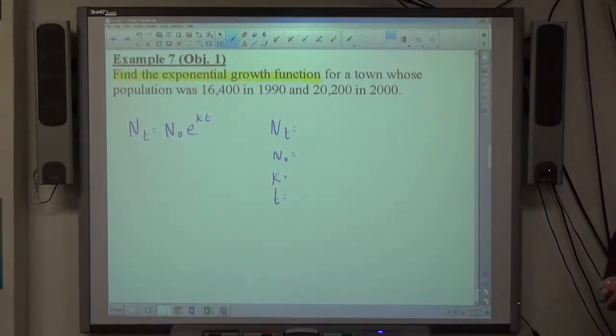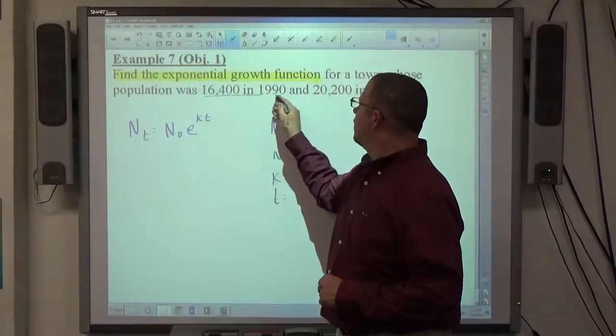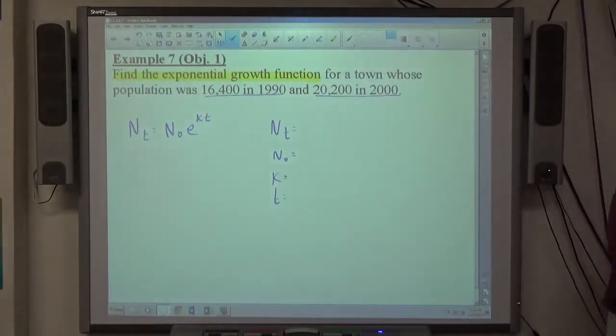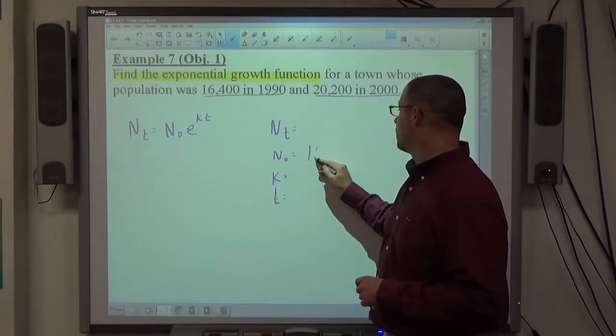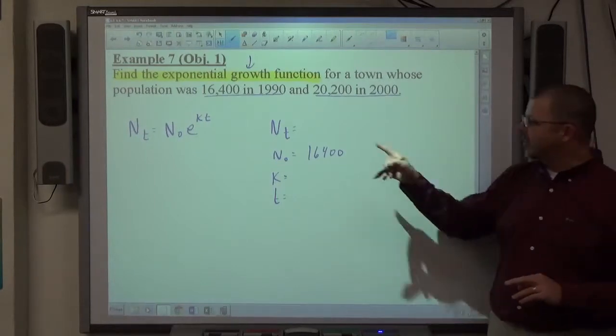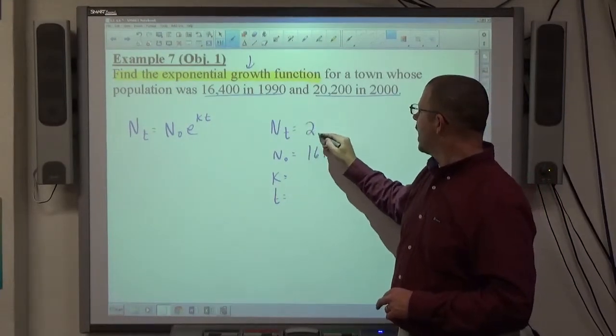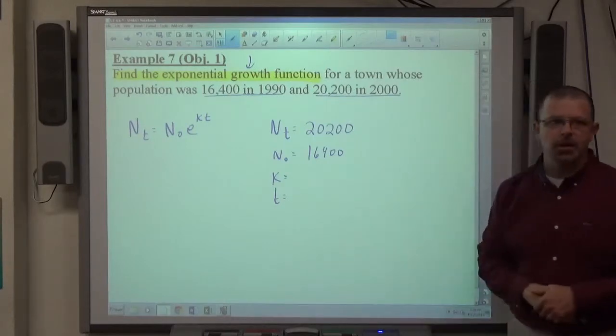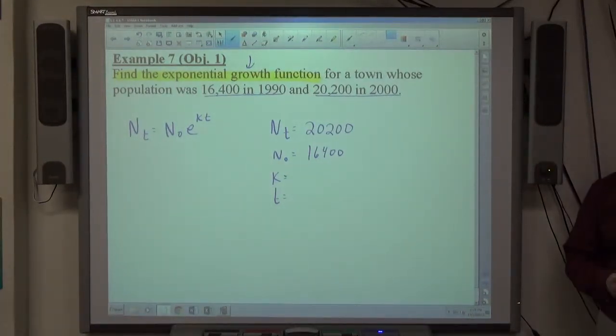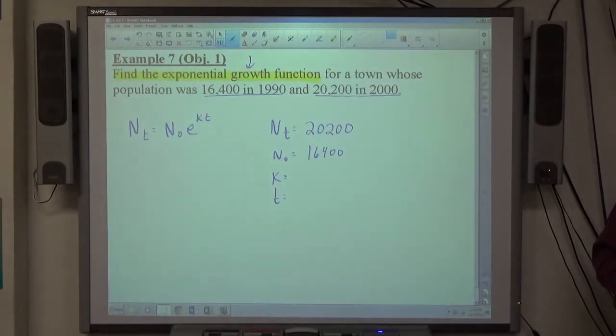We have a town whose population was 16,400 in 1990 and 20,200 in 2000. So this is information that's going to help us find some of these things. One of those populations is the initial, one is the final. Which one do you think is the initial one? And how do we know that? One is lower. And it obviously says growth, right? So we're expecting it to grow, so we expect to get bigger. The other reason we know that's the N sub zero is that's the earlier year. So 1990 happens before 2000. N sub zero is always before N sub t. So 20,200 is the final amount of population in this specific city that we're dealing with.